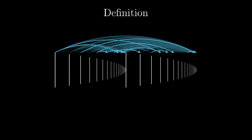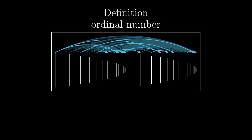We can define a general ordinal number this way: it is a set that is well-ordered by the graph of set membership, and there is nothing extra — meaning nothing other than members of the ordinal can point to other members. This property is usually called transitivity of the set. So academically speaking, an ordinal number is a transitive set that is well-ordered by set membership.